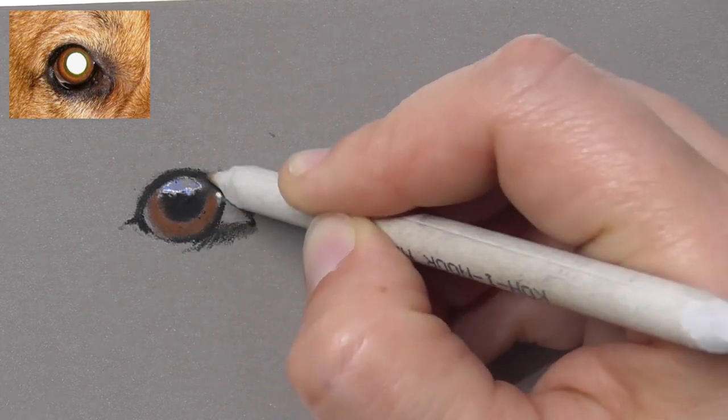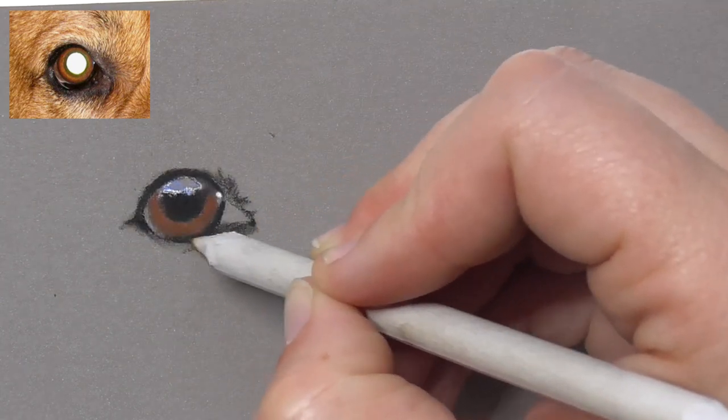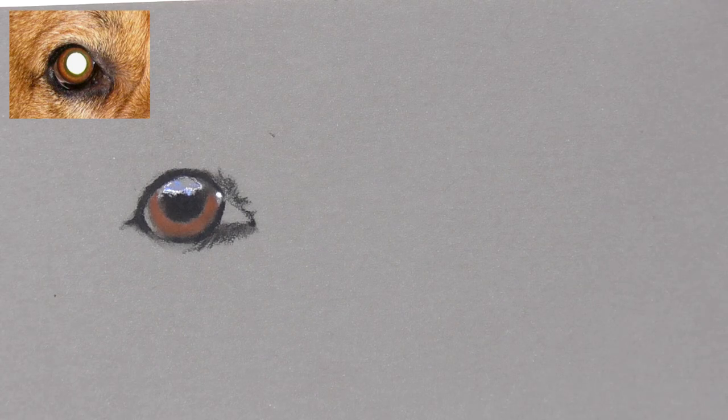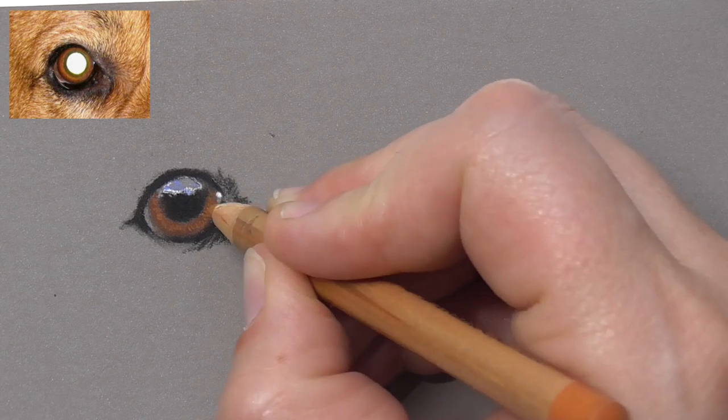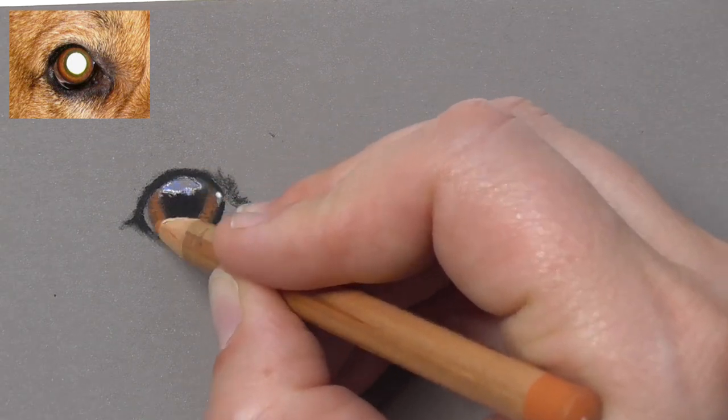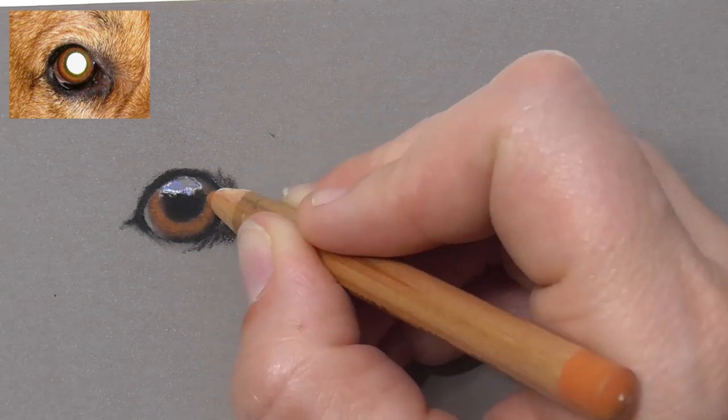Let's blend it with a paper stamp, with a blending stamp. So go over the black lines and then add lighter colors on the iris. Add little details in the eye.